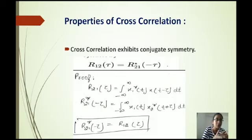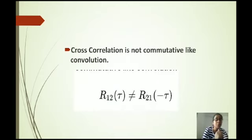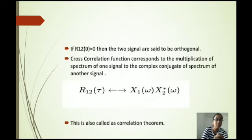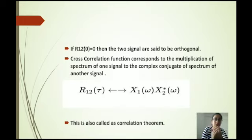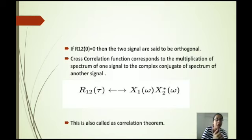Now we discuss the properties of cross correlation. The first property is that it exhibits conjugate symmetry: R12(tau) equals R*21(minus tau), and a proof is shown here. The second property is that cross correlation is not commutative like convolution, meaning R12(tau) is not equal to R21(minus tau). The third property is that if R12 equals zero then the two signals are said to be orthogonal.